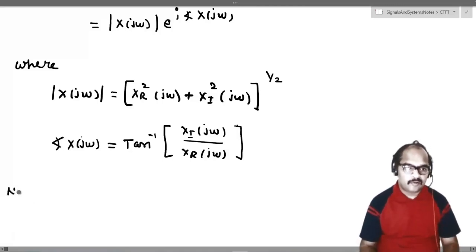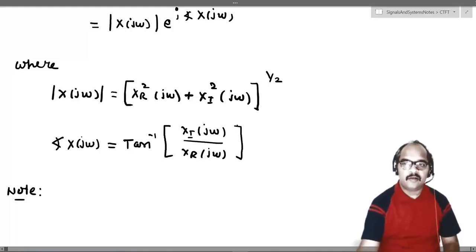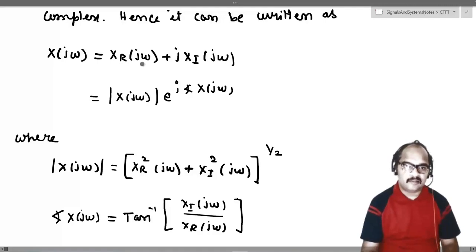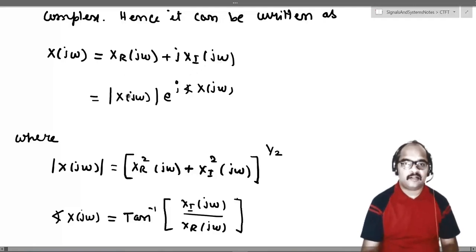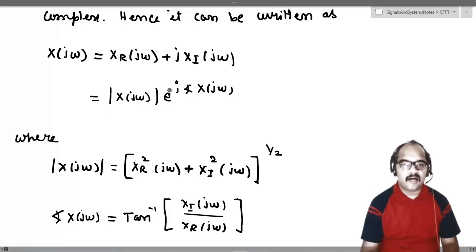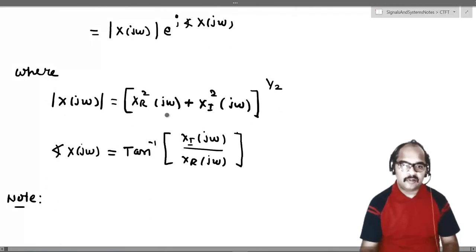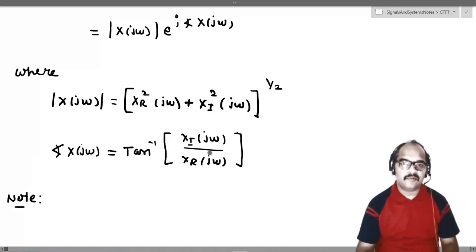Note: the notation above tells us that the Fourier transform is complex and can be written as real part plus j times imaginary part. Here X_R(jω) stands for the real part of the Fourier transform and X_I(jω) stands for the imaginary part. In polar form we write modulus of X(jω) times e^(j∠X(jω)), and the magnitude and angle are related by the formulas given above.